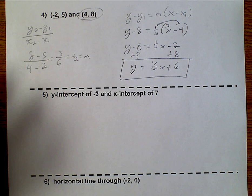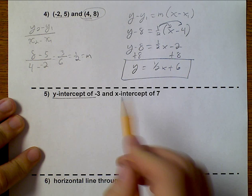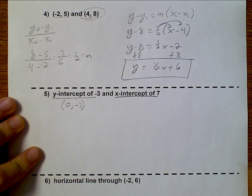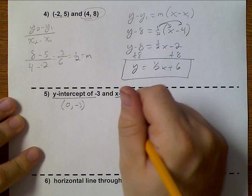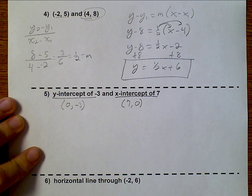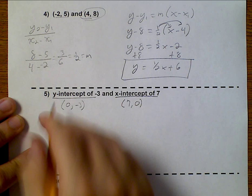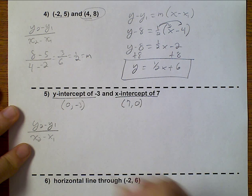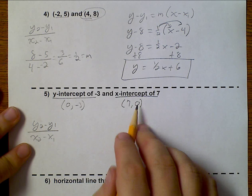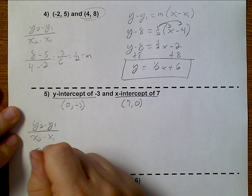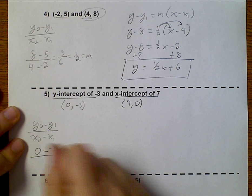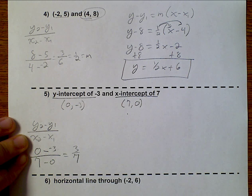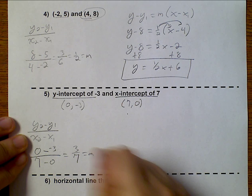Now, for example number 5, I'm given a y-intercept and an x-intercept. The y-intercept is (0, -3), and my x-intercept would be (7, 0). And I still need to figure out my slope. And so my y2 is 0 minus negative 3 over my x2 is 7 minus 0, which is just 3 sevenths. That's my slope.